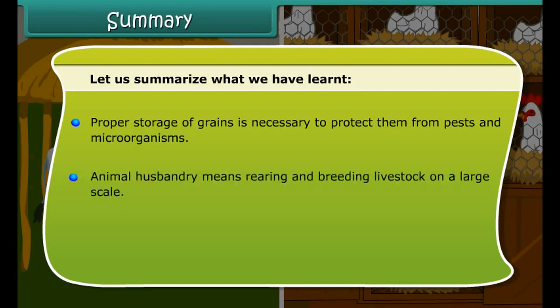Let us summarize what we have learned. In India, crops are broadly categorized into two types based on seasons: Rabi and Kharif. Supply of water to crops at appropriate intervals is called irrigation. Harvesting is the cutting of the mature crop manually or by machines. Separation of the grains from the chaff is called threshing. Proper storage of grains is necessary to protect them from pests and microorganisms. Animal husbandry means rearing and breeding livestock on a large scale.